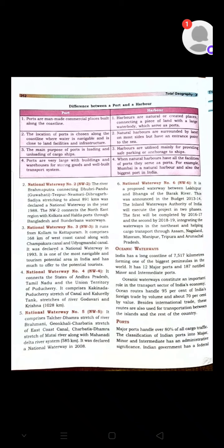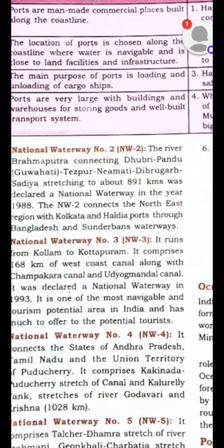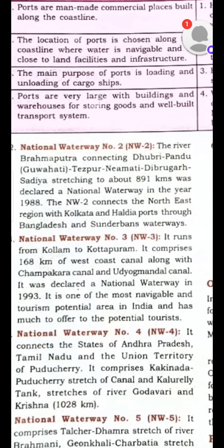National Waterway 2 comprises the River Brahmaputra, connecting Dhubri, Pandu, and Tezpur to Neamati. The two main names to remember are Sadiya and Dhubri — the waterway runs between Sadiya (S-A-D-Y-A) and Dhubri. This is entirely in the northeast and is called National Waterway 2.